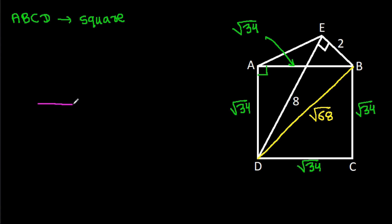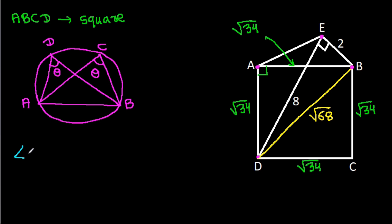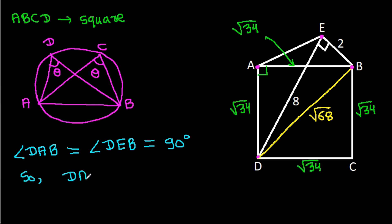On any line, if it is making an angle theta at one point and the same angle theta at another point, then the four points will be cyclic. Here, BD is making an angle of 90 degrees at A, and it is making an angle of 90 degrees at E. We have angle DAB equal to angle DEB, that is 90 degrees. So DAEB will be cyclic.